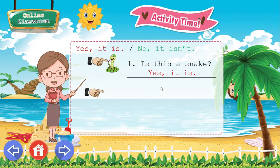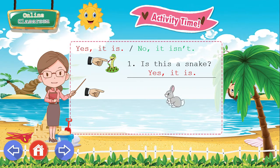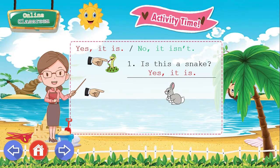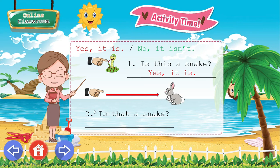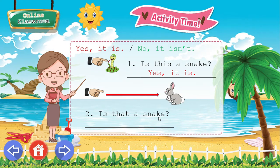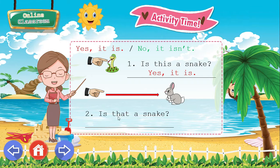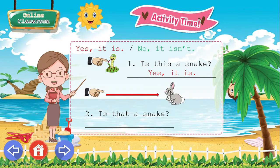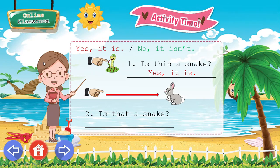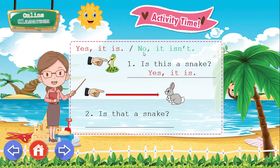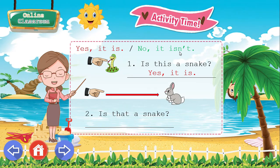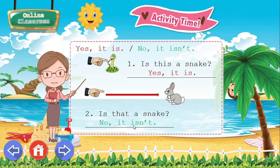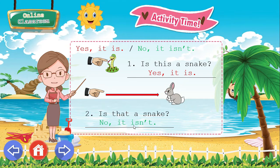Another example — please look at the picture. What animal is it? It's a rabbit, right? Number 2: Is that a snake? Is it a snake? What is your answer? The answer is: No, it isn't.